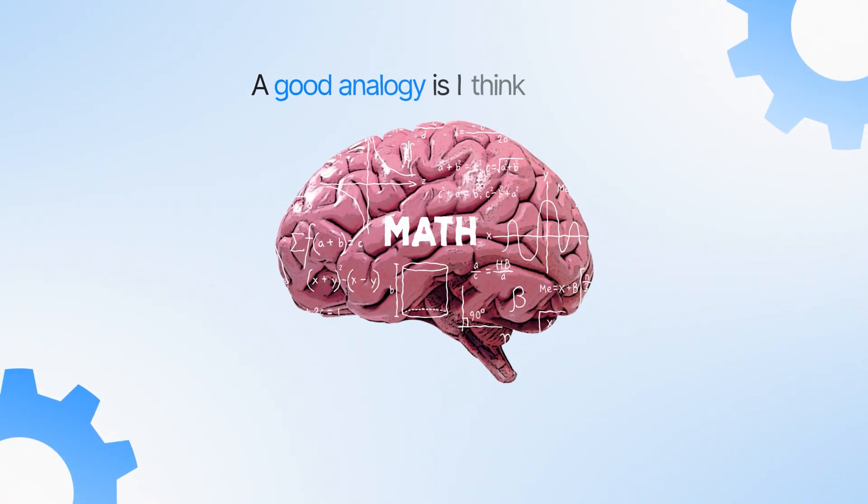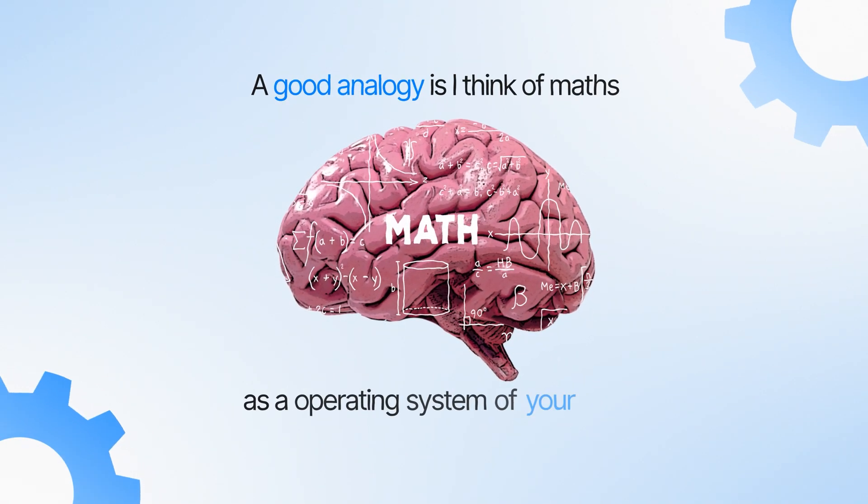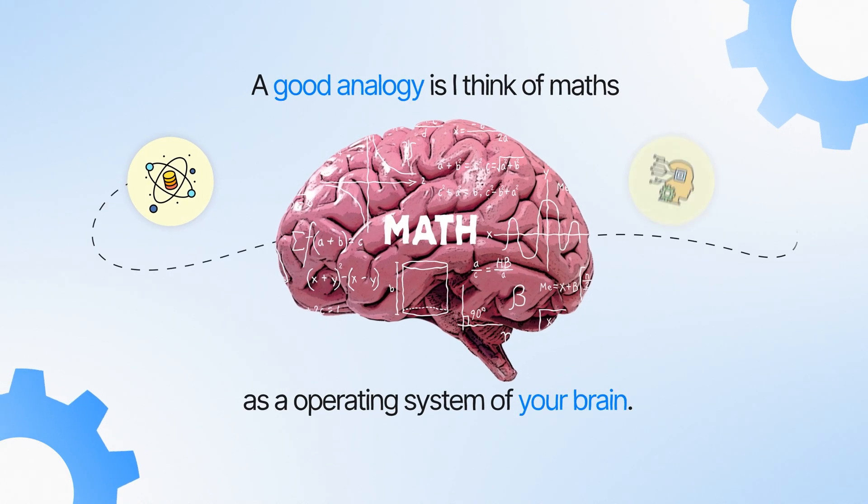A good analogy is to think of maths as the operating system of your brain for data science and machine learning. Every model, every algorithm, every insight you develop runs on this operating system. If your operating system is buggy, or outdated, or just not very good, then things are not going to run smoothly. That will really slow you down in the long term. So lay the foundations now whilst you're studying and really develop good skills in maths — it'll pay so much dividends in the long run.